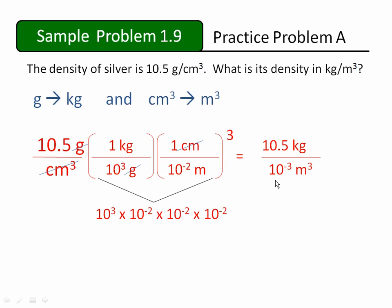Now we'll actually divide the numerator, 10.5 kilograms, by 10 to the negative 3 cubic meters. We'll find a solution of 10.5 times 10 to the third kilograms per cubic meter.